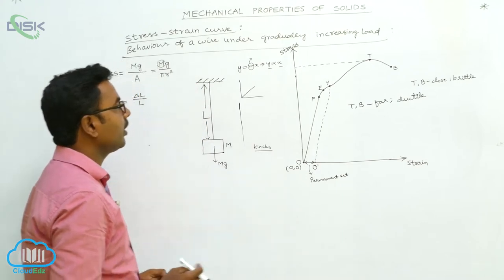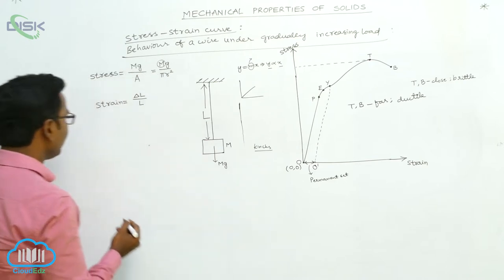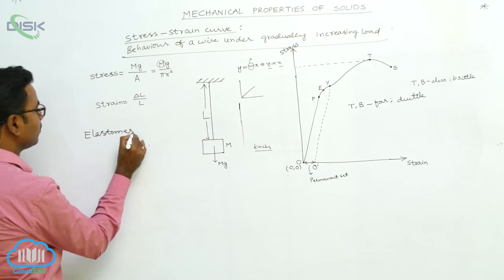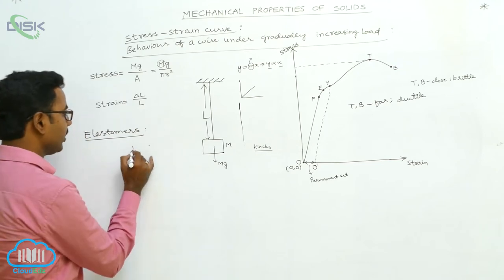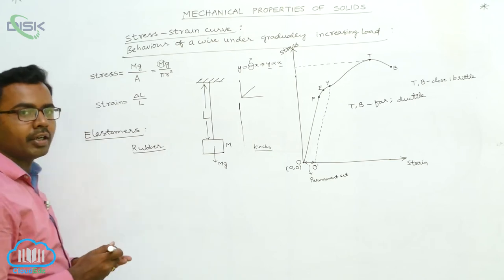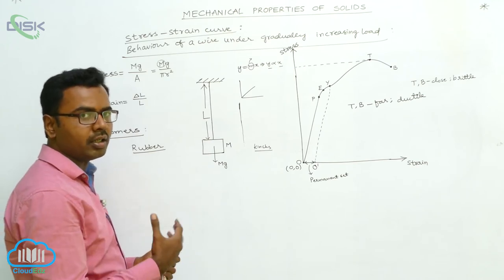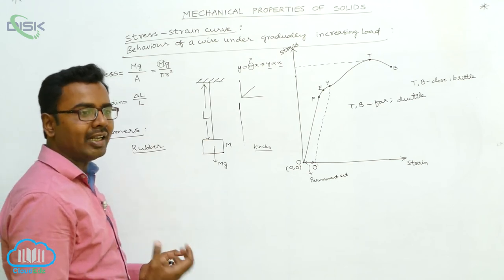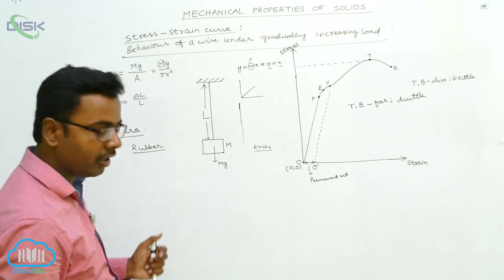This is the behavior of a wire under gradually increasing load. We also define one more type of material called elastomers. The best example of an elastomer is rubber. Elastomers are materials that can be elongated to very large strains compared to other materials.